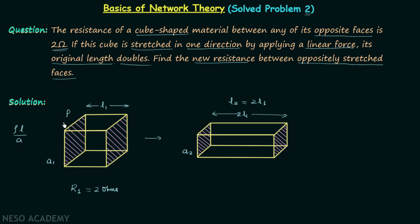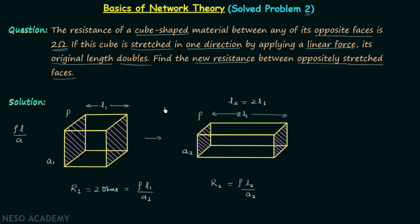We assume the material has resistivity Rho, and since we are not changing the material, resistivity will not change. So R1 equals Rho times L1 divided by A1, and R2 equals Rho times L2 divided by A2. It is clear that no extra material is being added when we apply the linear force.